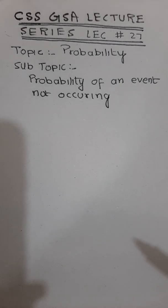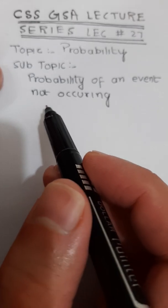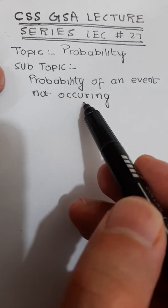In the previous lecture I discussed the concept of probability. Today I will talk about probability of an event which is not occurring.